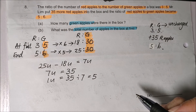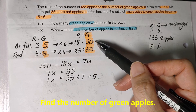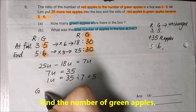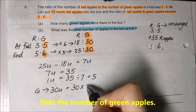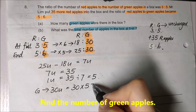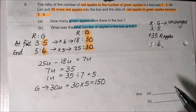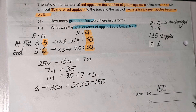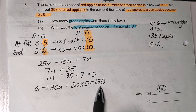With 1 unit equal to 5, I'm able to find the number of green apples. The number of green apples is 30 units, which is 30 times 5, giving 150. So my answer for Part A is 150 green apples.